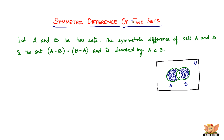Let A and B be two sets as shown in the Venn diagram. The symmetric difference of sets A and B is the set (A minus B) union (B minus A), and is denoted by A△B. Recall from the previous video: A minus B was shaded on one side and B minus A on the other. The symmetric difference combines both — it is the union of A minus B and B minus A.